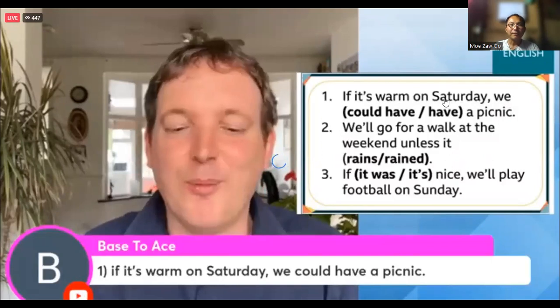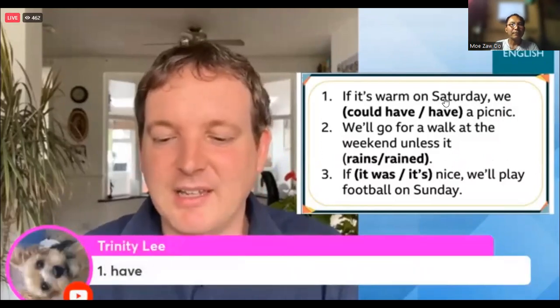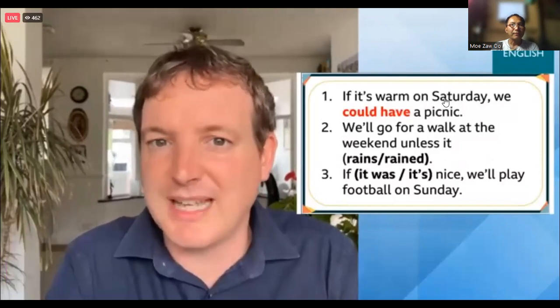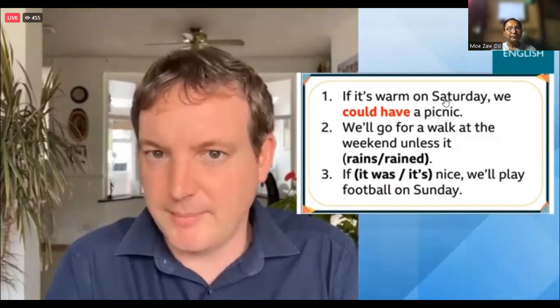For number one: 'if it's warm on Saturday, we could have a picnic'. Being warm on Saturday is possible and likely - certainly if you've seen the weather forecast around Europe recently, it could be warm. So 'if it's warm on Saturday, we could have a picnic' - that's a modal verb there, like we looked at earlier. Number two: 'we'll go for a walk at the weekend unless it rains or unless it rained' - what should it be?